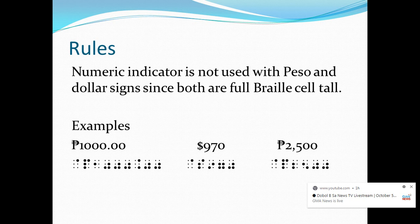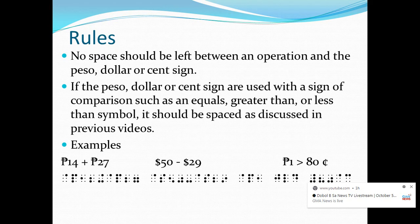Next, we have $970. So in Nemeth, that should be written as dot 4 on the first cell, letter S on the second cell, and digits 9, 7, and 0 on the third to fifth cells. Then we have ₱2,500, written in Nemeth as dot 4 on the first cell, letter P on the second cell, and digits 2, 5, 0, 0 on the succeeding cells.